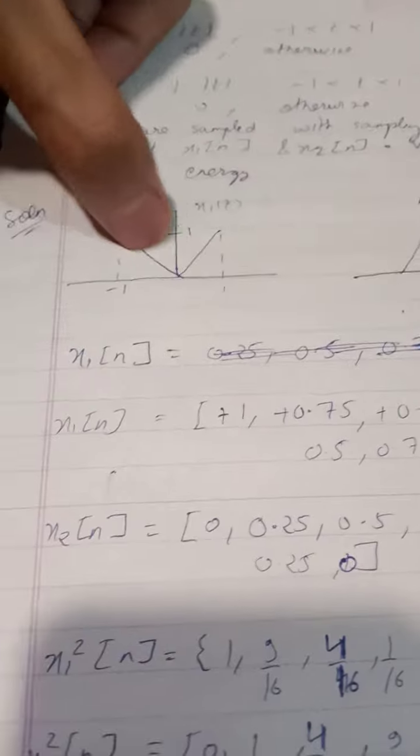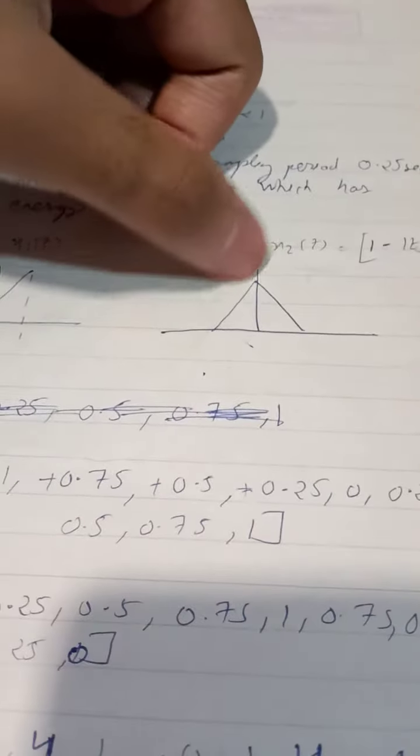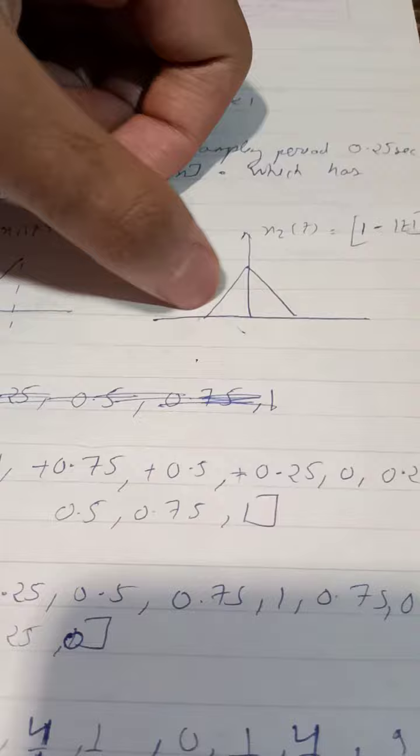So x1 of t is mod of t drawn in this way and x2 of t is 1 minus mod of t drawn in this way.